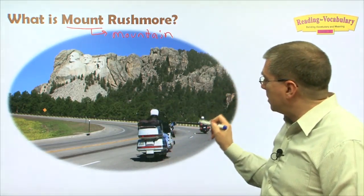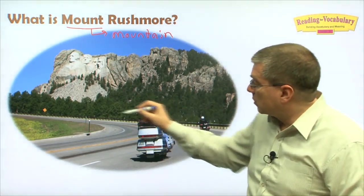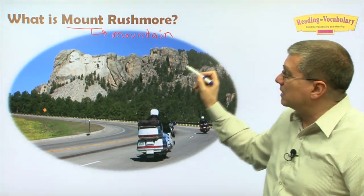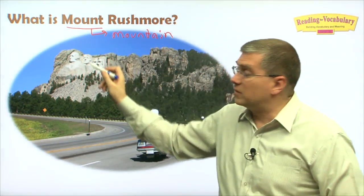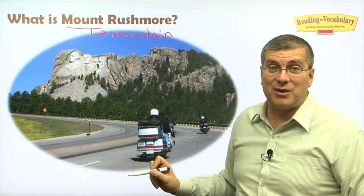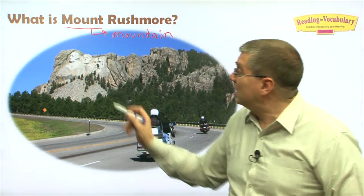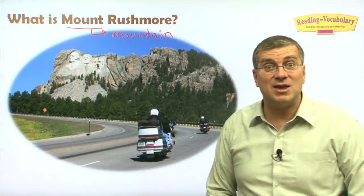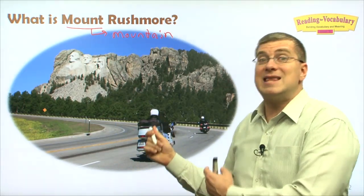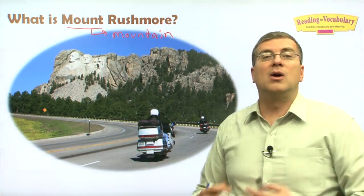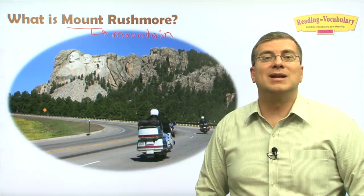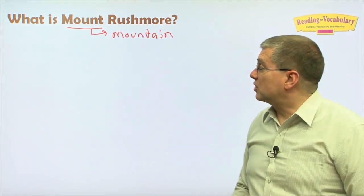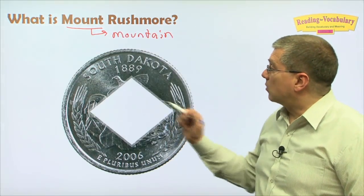Here are a couple of people on motorcycles, and here's a road. Look at how big this rock is. Can you see something special about this mountain? There are some faces in the mountain. How did they get there? We'll figure that out when we look at the reading.